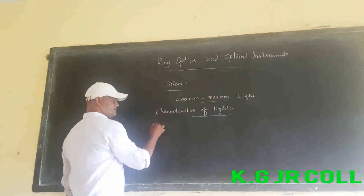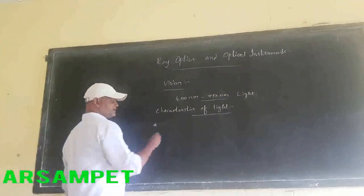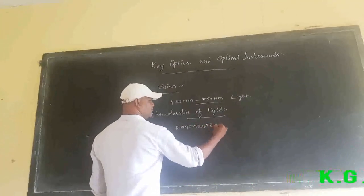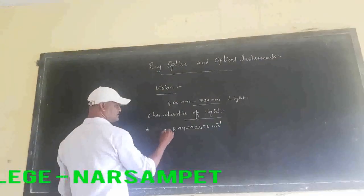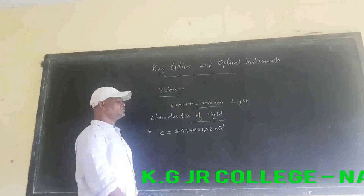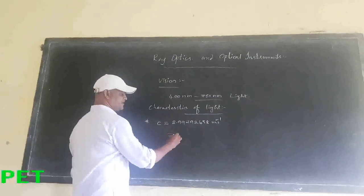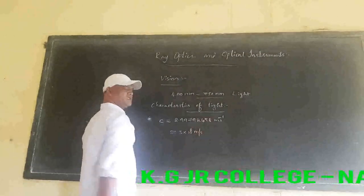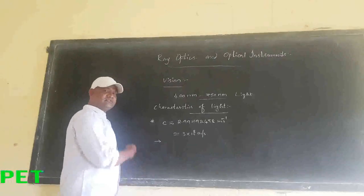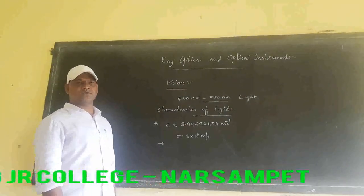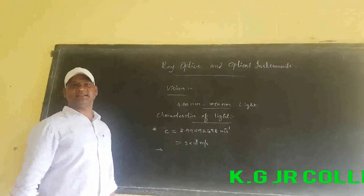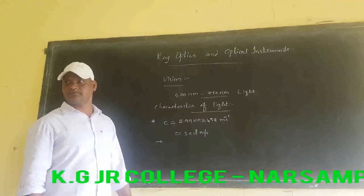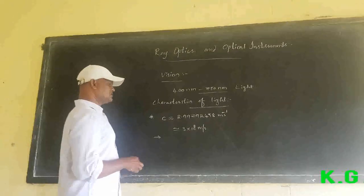Light waves travel in a vacuum with a speed of approximately 2.998 × 10⁸ m/s. Light travels along a straight line, and being a form of electromagnetic radiation, it belongs to the visible spectrum of the electromagnetic spectrum.